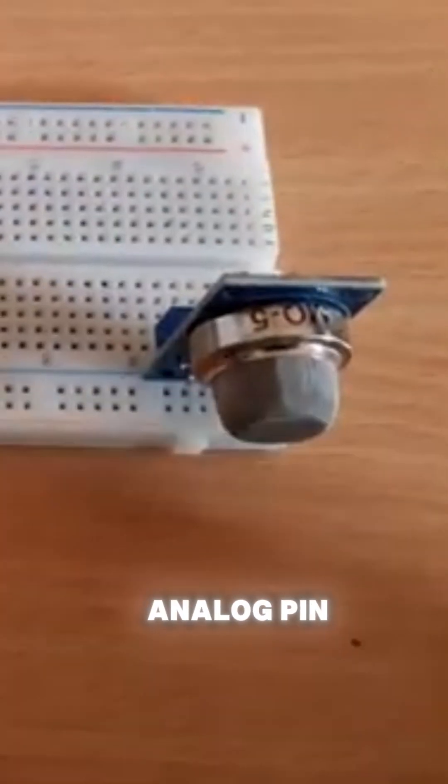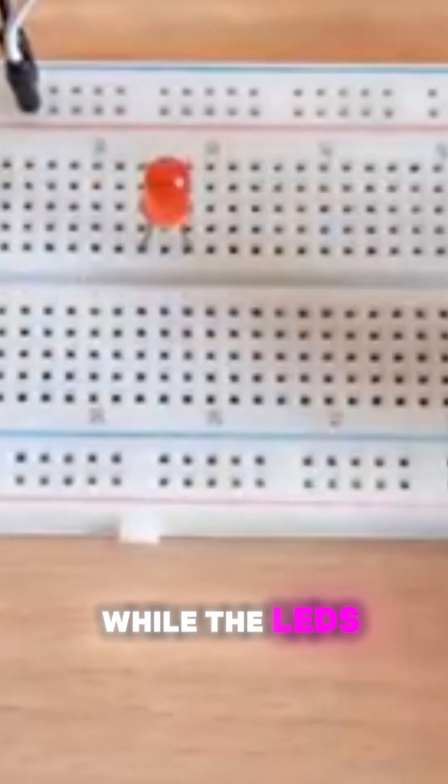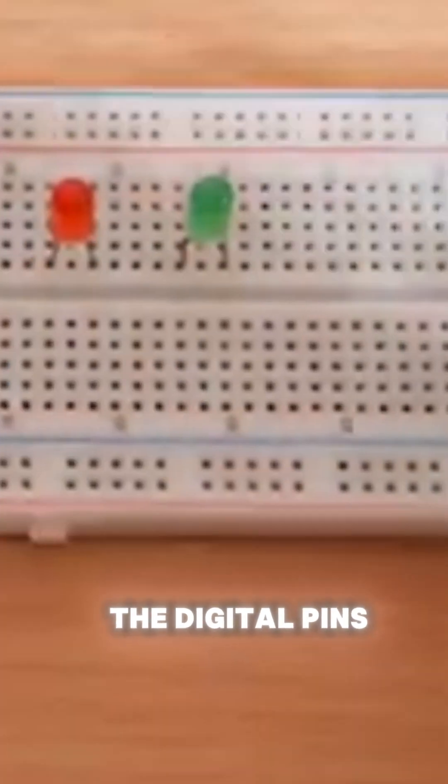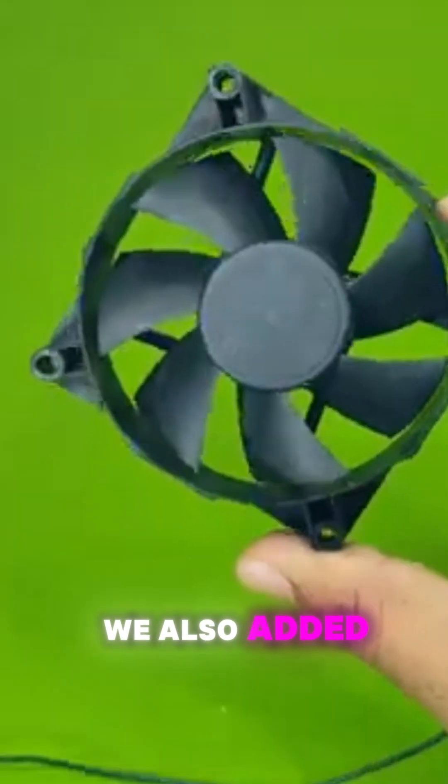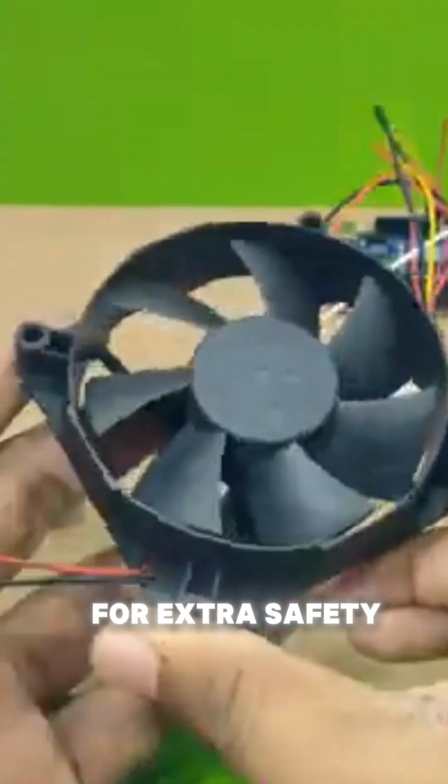Here's how we constructed the circuit. The gas sensor is connected to the microcontroller's analog pin, while the LEDs and buzzer are connected to the digital pins for visual and audible alerts. We also added a relay to control an external device like a fan for extra safety.